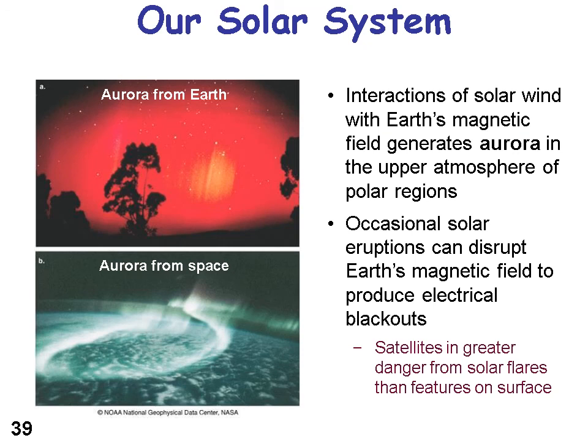Interactions of solar wind with the Earth's magnetic field generate an aurora — the aurora borealis and aurora australis. You can see aurora from the Earth and also from space. If you go to the northern part of the U.S. or up into Canada, you can see aurora especially in the winter or summer — I've actually never seen one myself.